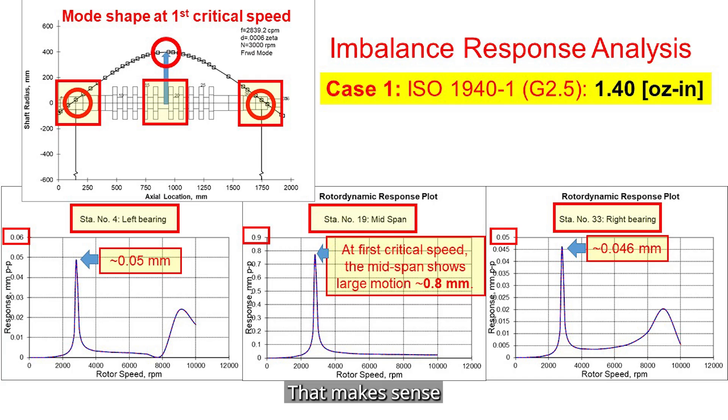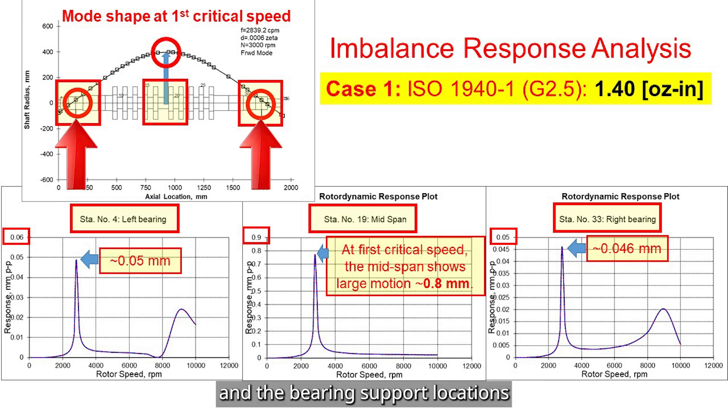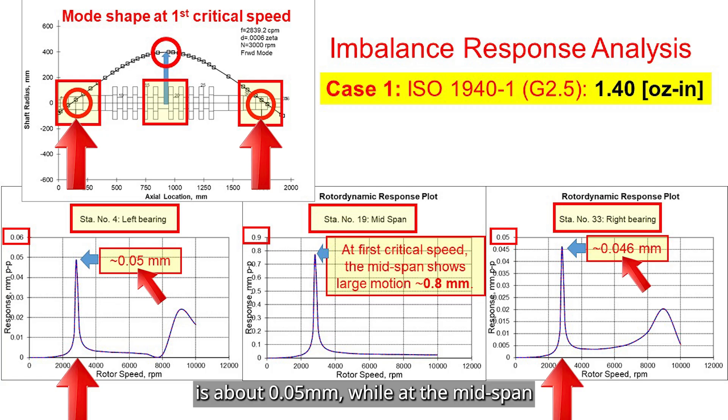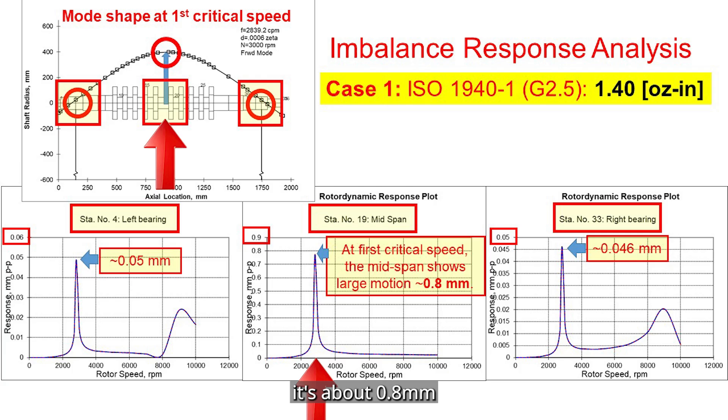That makes sense. Because at the first critical speed, the vibration mode shape is bending mode, and the bearing support locations are node points with minute vibration, while the middle of the shaft deflects more. Looking at the numbers here, the peak vibration amplitude at the bearing is about 0.05 mm, while at the mid-span it's about 0.8 mm, so more than 10 times larger.